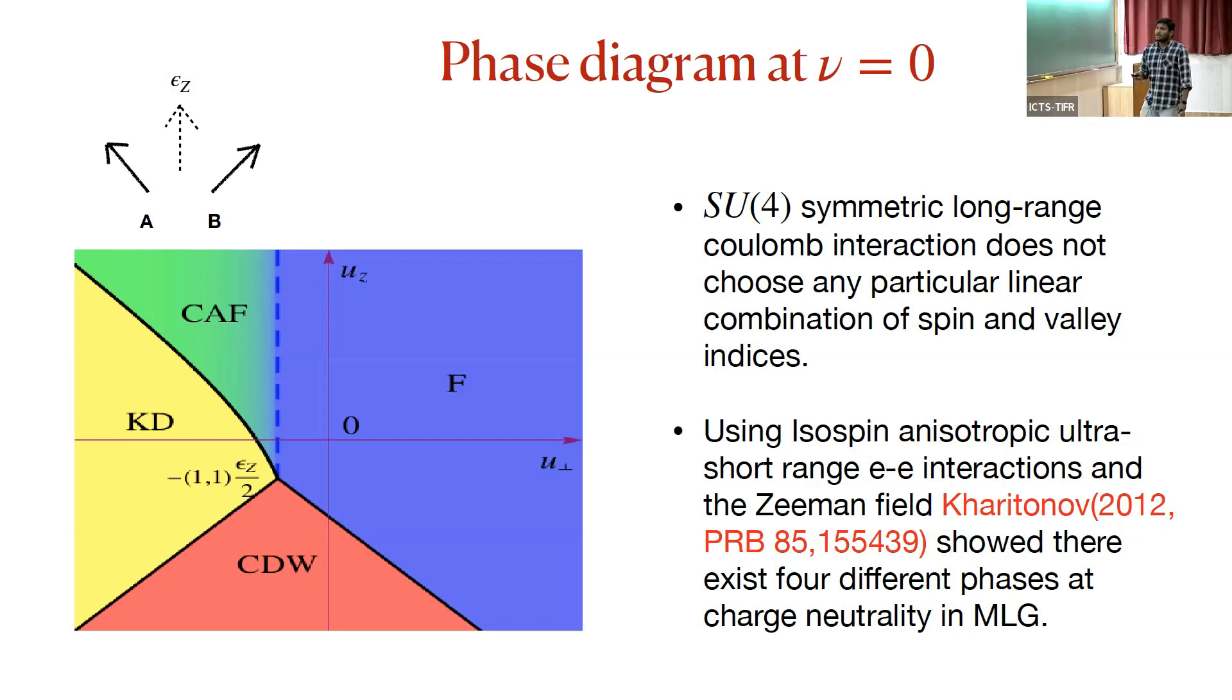Then in a very seminal work by Kharitonov in 2012, where he proposed that using isospin anisotropic ultra-short range electron-electron interactions and the Zeeman field that is always present in quantum Hall experiments, there exist four different phases. The ferromagnet phase is simply spin polarized phase with all spins pointing up in all sublattices. The canted phase is not completely antiferromagnetic. If you look at electrons in two sublattices A and B, they have some in-plane component that's antiferromagnetic, but they also have some ferromagnetic component along the Zeeman direction. The Kekule distorted or bond distortion phase is like graphene with a benzene-like structure where three bonds of the six bonds are filled and other three bonds are empty. The charge density order is simple charge modulation where one sublattice is filled and the other sublattice is empty.